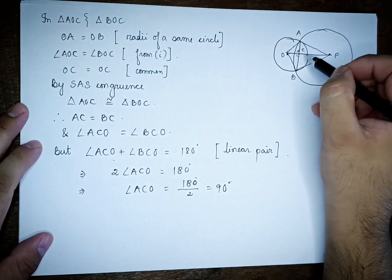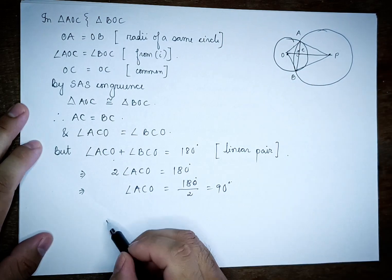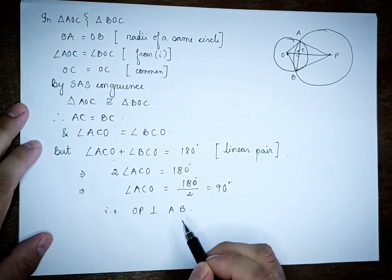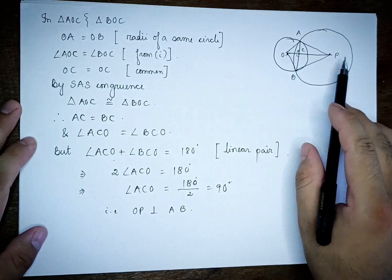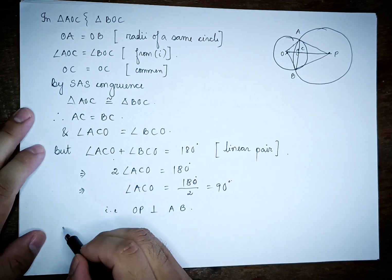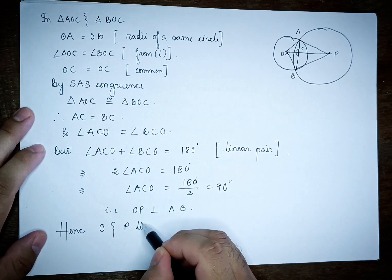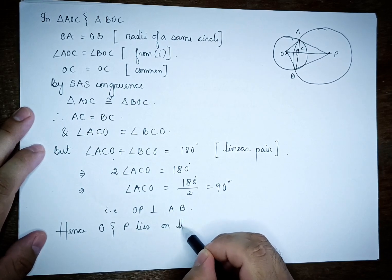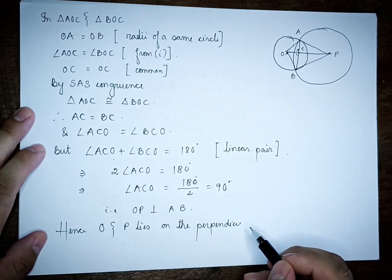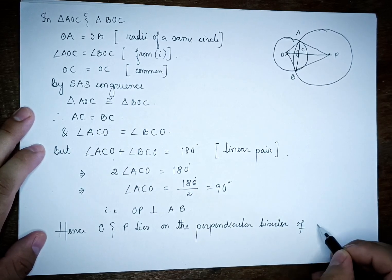If angle ACO is 90 degrees, then AB and OP are perpendicular, that is OP is perpendicular to AB. Hence O and P lie on the perpendicular bisector of AB. OP is the perpendicular bisector of AB.